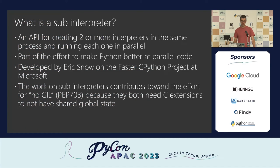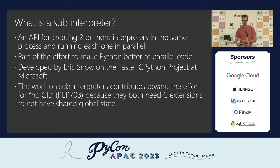This lock is what subinterpreters are about — basically about moving the lock so that you can have things running in parallel in threads as well as in subinterpreters. So what is a subinterpreter? It's an API for creating two or more interpreters in the same Python process and then running each one in parallel. It's part of the effort to make Python better at running parallel code, developed by Eric on the faster CPython team — Eric works at Microsoft. PEP 703, the no-GIL discussion that's been going on for a couple of years, does contribute towards the no-GIL effort. It is not a competing implementation of no-GIL — they work hand in hand. A large chunk of the work to make subinterpreters happen has actually been removing global state from C modules.